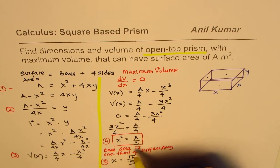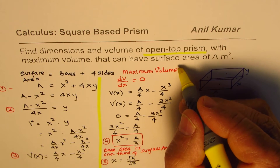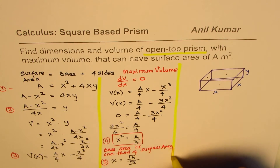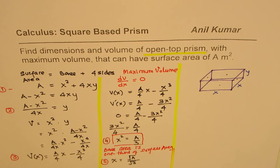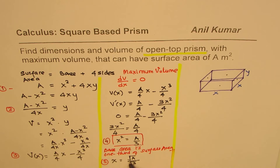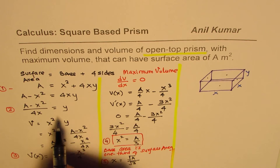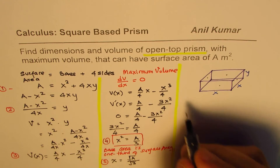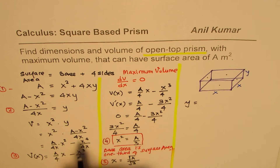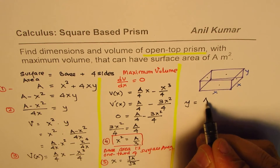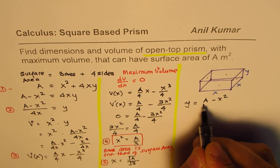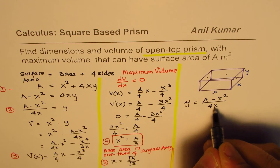Note that if the top were closed, there would be six surfaces, and in that case the base area would be one-sixth of the surface area. For the open-top case the base area is one-third — so we are looking for a wider base in this case, which makes sense. Now since we know X, we can find Y.